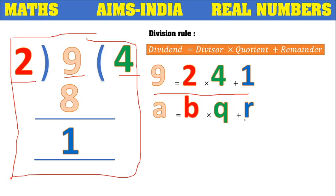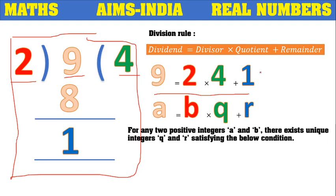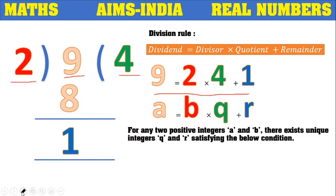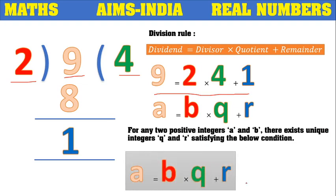For any two positive integers a and b, there exist unique integers q and r satisfying the condition a = bq + r. Here we took two positive integers — 9 and 2. For those two integers a and b, there exist two more integers like 4 and 1, which are unique. Unique means one and only one — there exist one and only one pair of such integers satisfying the condition a = bq + r.